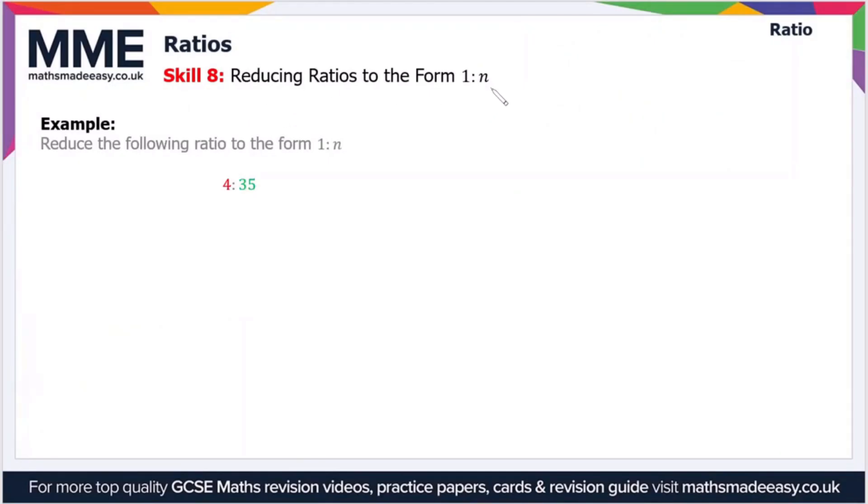Reducing ratios to the form 1 to n. In this example, reduce the following ratio to the form 1:n. The ratio is 4 to 35. All we have to do is divide the ratio by the smallest of the parts, and that in this case is 4. So if we divide both sides by 4...